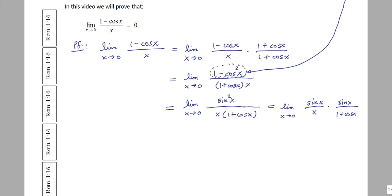And I think you probably see what I'm doing here when I do that. So then I can write this the following way. I can say this is the limit of x going to 0 of sine of x over x times the limit as x goes to 0 of sine of x over 1 plus cos of x.